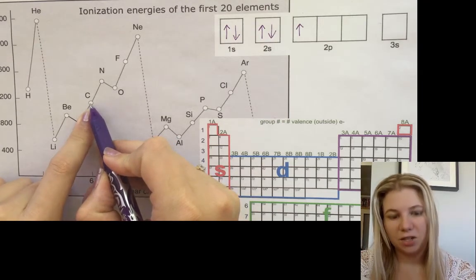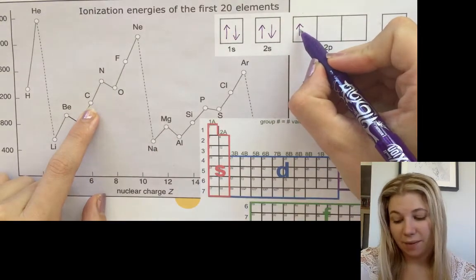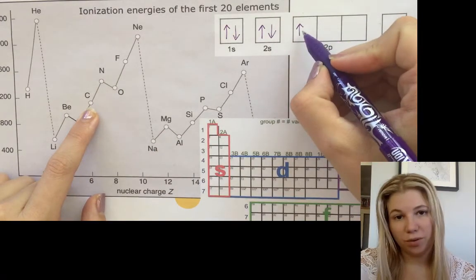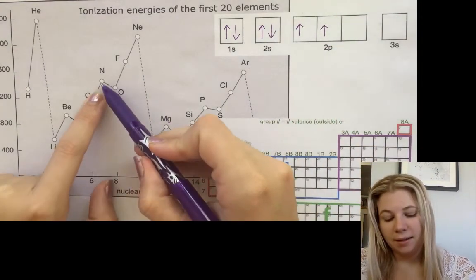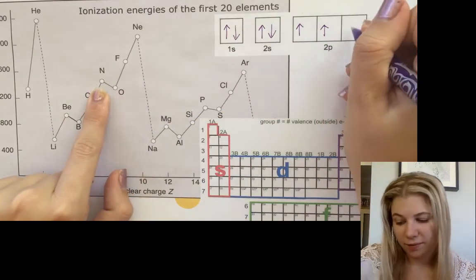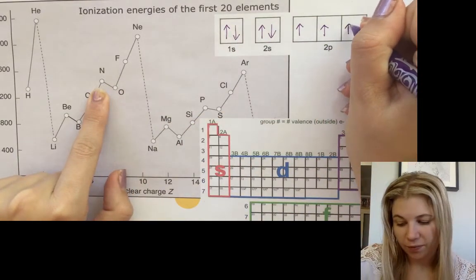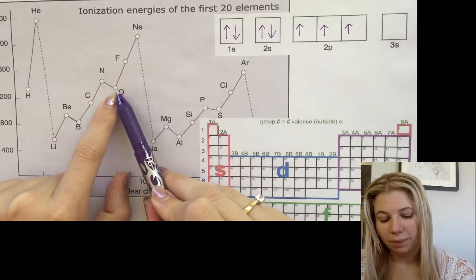Carbon, the ionization energy is still increasing and the next electron for carbon actually doesn't go in this first orbital for p. It actually goes into the next one like this. Nitrogen, again it doesn't go into either of these ones. It actually goes into the third one over here.